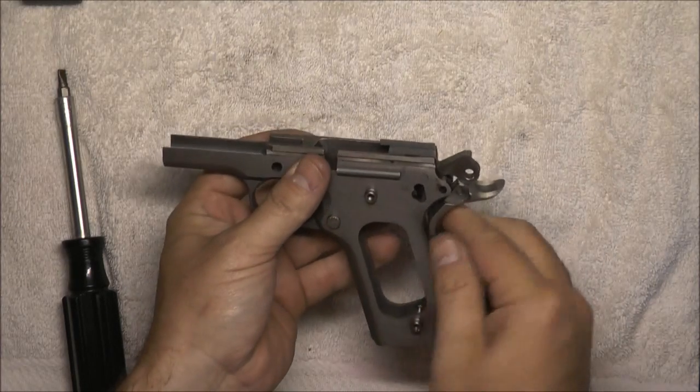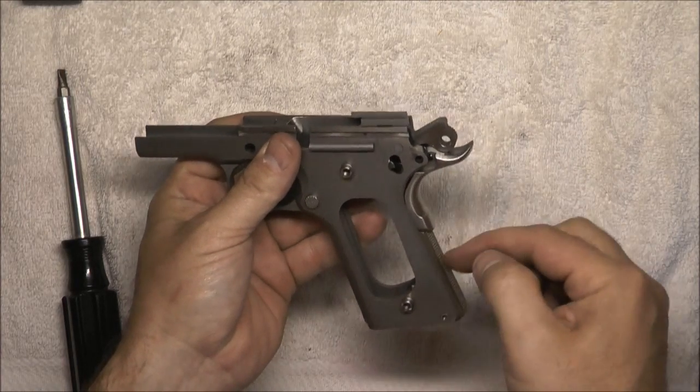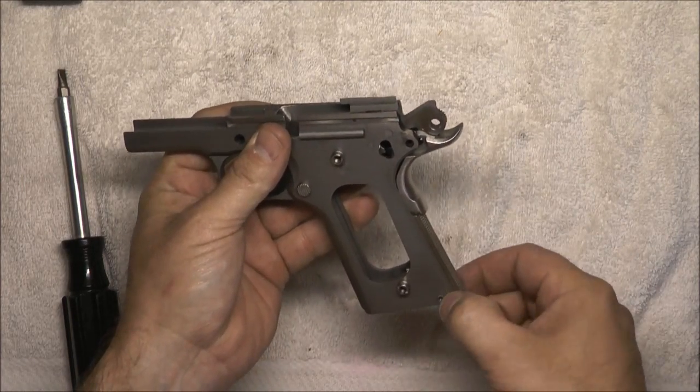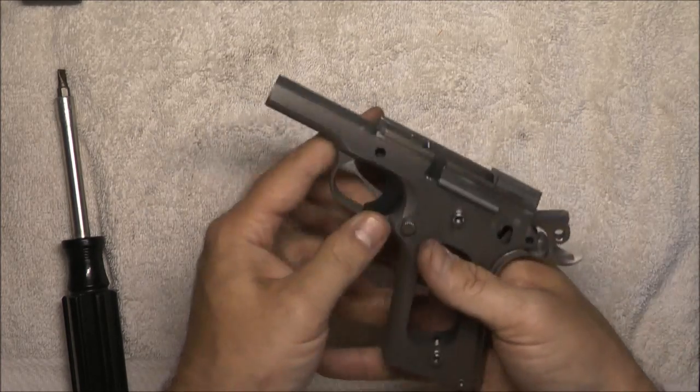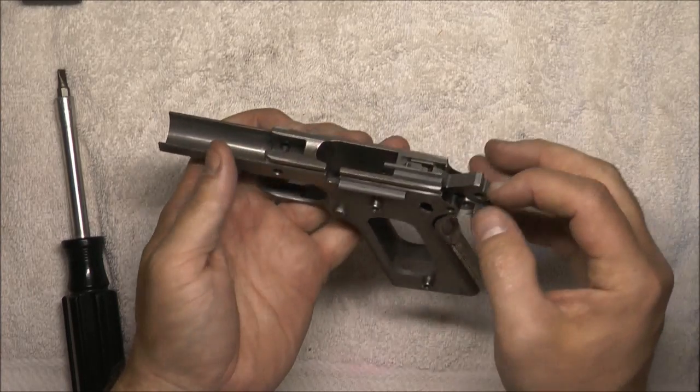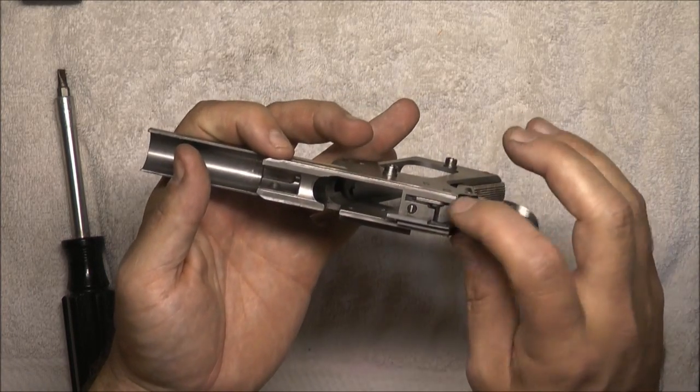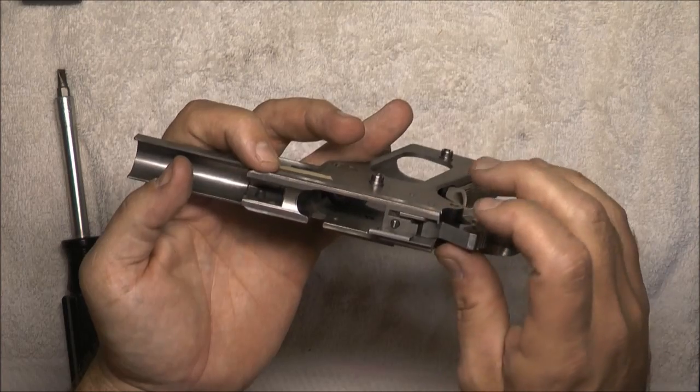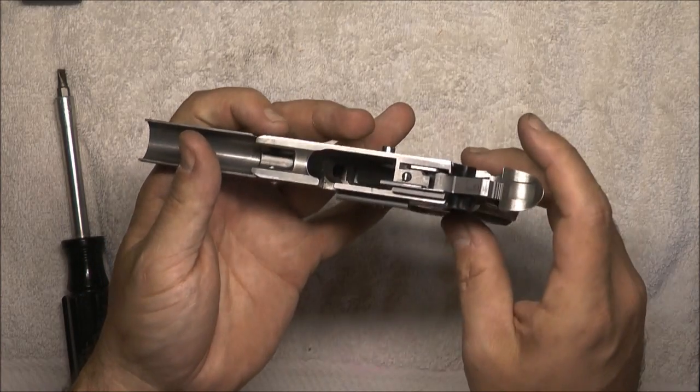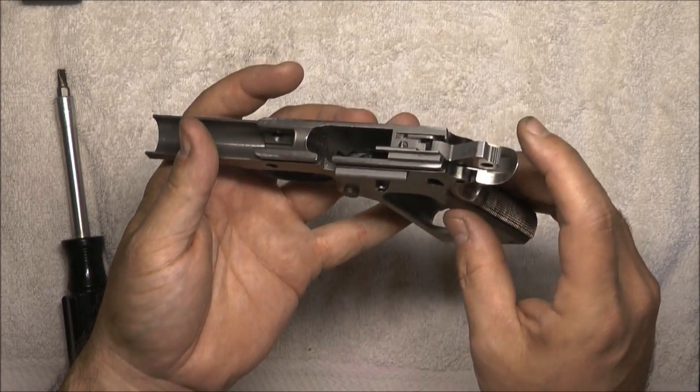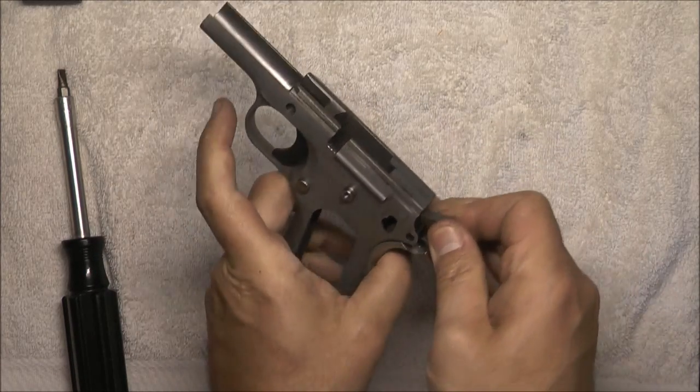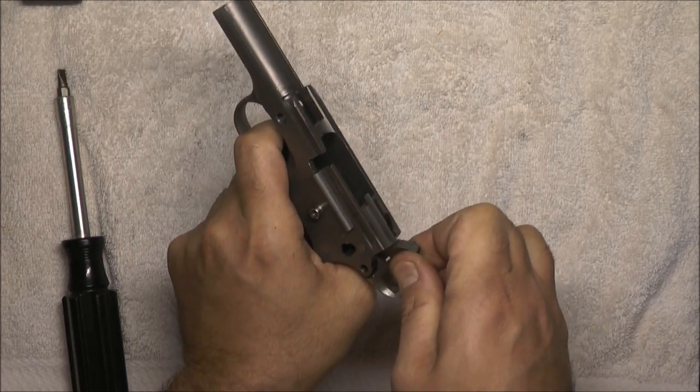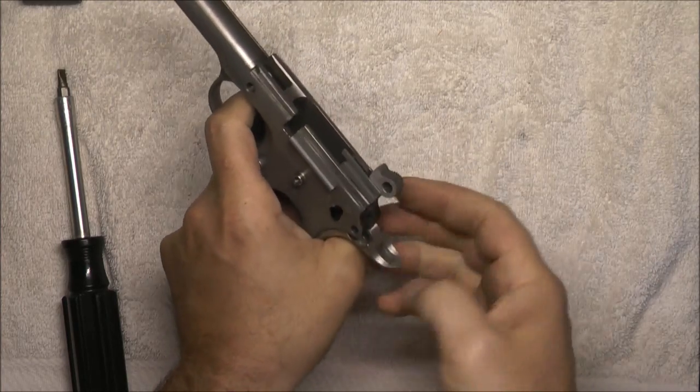The next step for us is going to be take the pressure off this mainspring housing so that we can remove the pin. So we're going to uncock this hammer. What you don't want to do is just squeeze the trigger and let your hammer come up and slam into the frame. You can damage the frame, you can crack it, bend it, you can bend your hammer. You can do a multitude of different things that you do not want to do to your gun. So we'll hold on to that hammer and very carefully release the pressure.